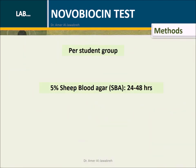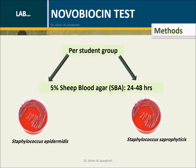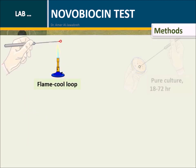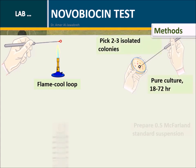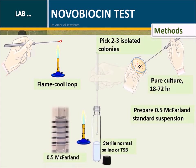Methods: Provide each student group with two sheep blood agar plates, one with novobiocin disc. From a pure culture, pick two to three isolated colonies and prepare a 0.5 McFarland standard suspension in sterile normal saline or trypticase soy broth.